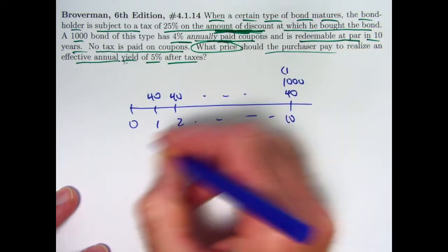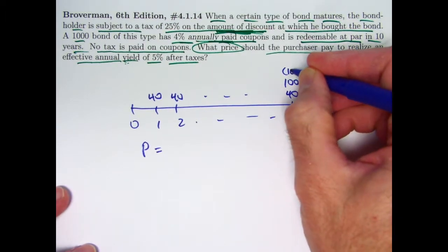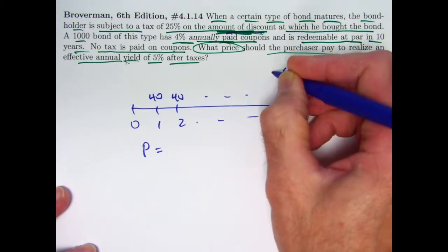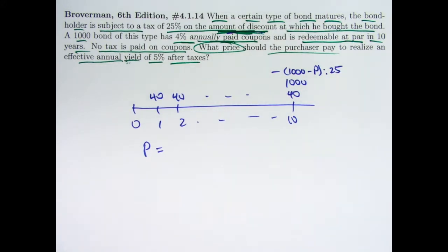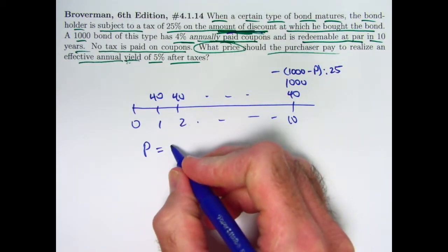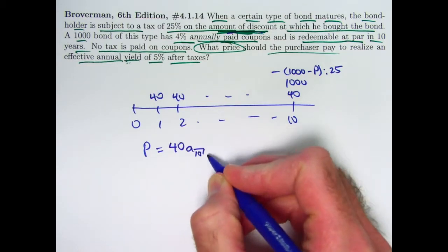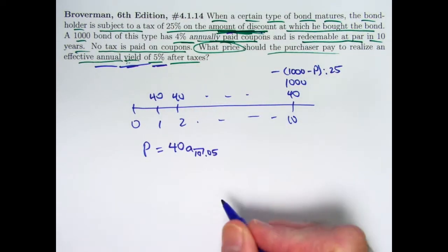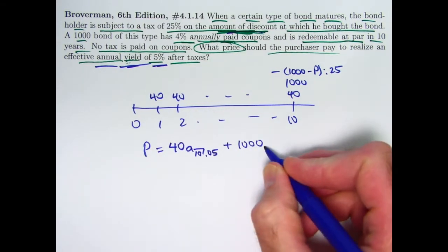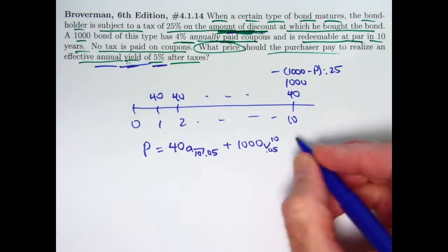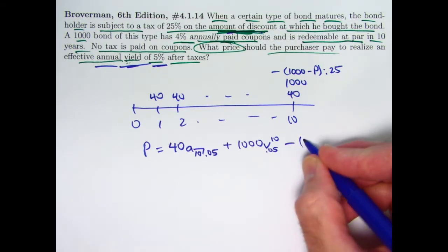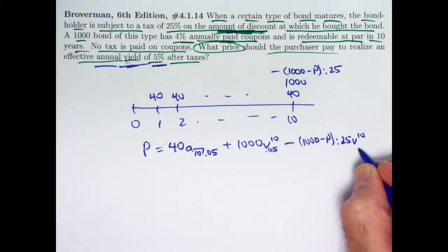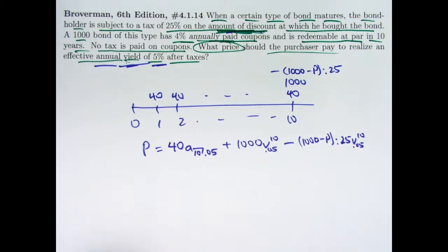If P is the unknown price, the taxes are 25% of the amount of discount, which is $1,000 minus P. Think of that as a negative quantity to be subtracted. So the price equation is: P = 40·a₁₀|.05 + 1000·v¹⁰ − (1000 − P)·0.25·v¹⁰, where the yield is 5% annually — you do not divide by 2 since coupons are paid annually — and v is at 0.05.